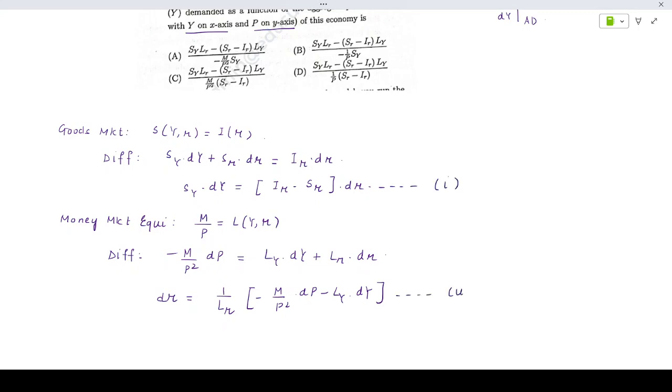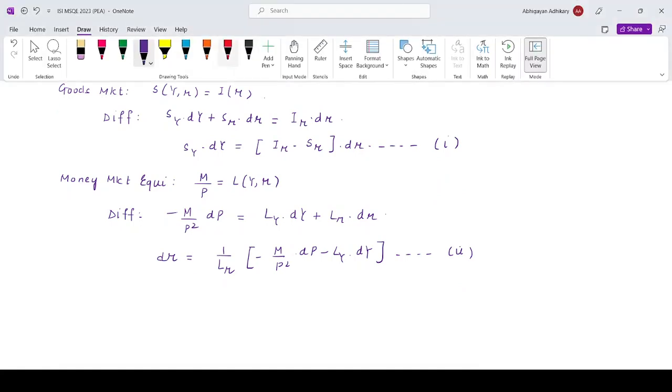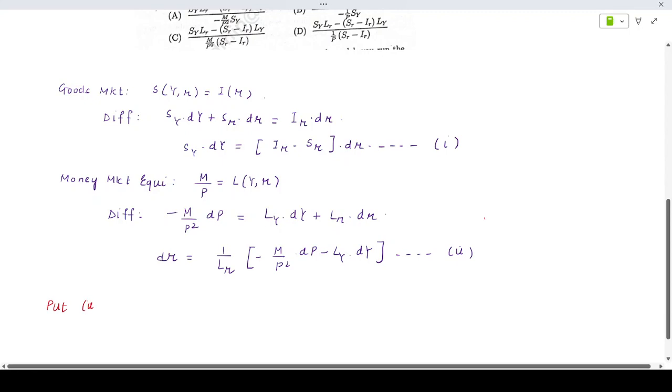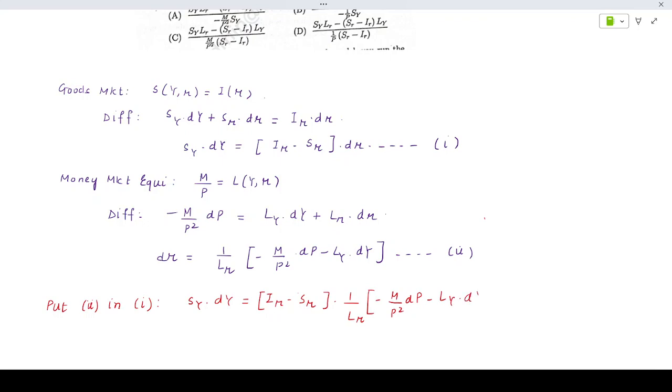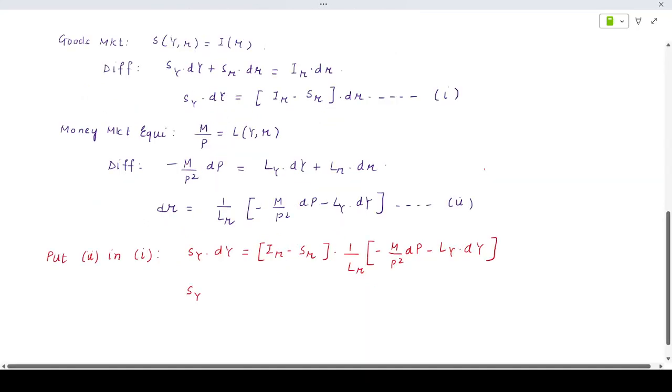Now putting equation 2 into equation 1. Sy dY remains, then you have (Ir minus Sr) times 1/Lr times (minus M/P squared dP minus Ly dY). This becomes Sy dY equals (Sr minus Ir) times 1/Lr times M/P squared dP plus Ly dY.